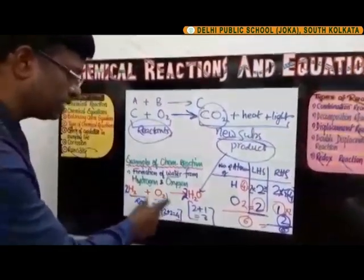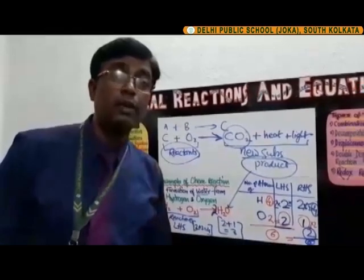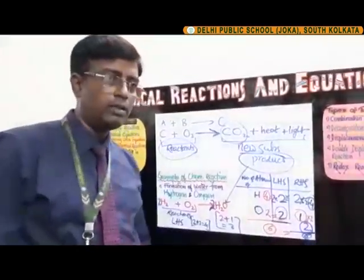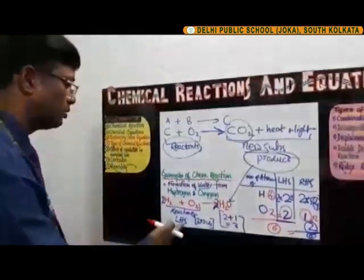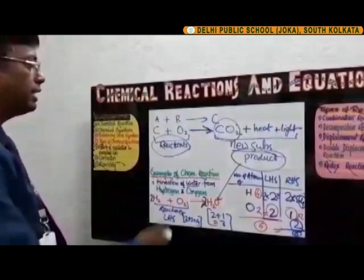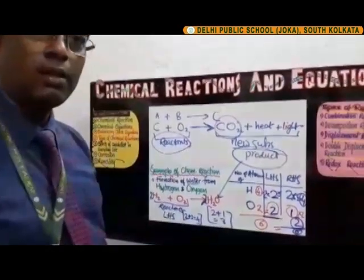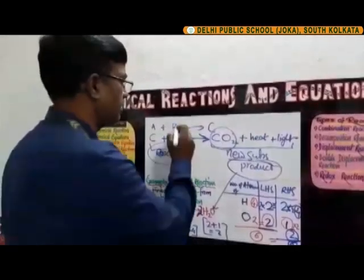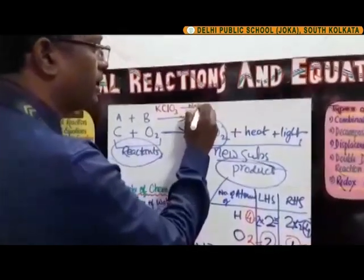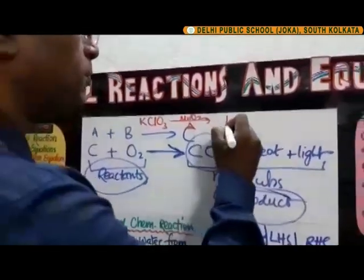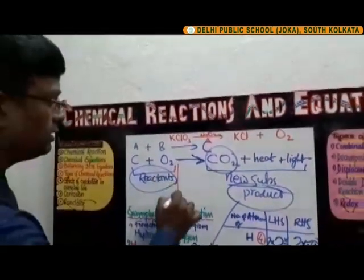We do this balancing because every reaction obeys the law of conservation of mass — the mass of the left-hand side is always equal to the right-hand side of an equation. Let's take another example: potassium chlorate (KClO3), in the presence of manganese oxide when heated, gives potassium chloride (KCl) along with oxygen gas. Let's set up a table for this.